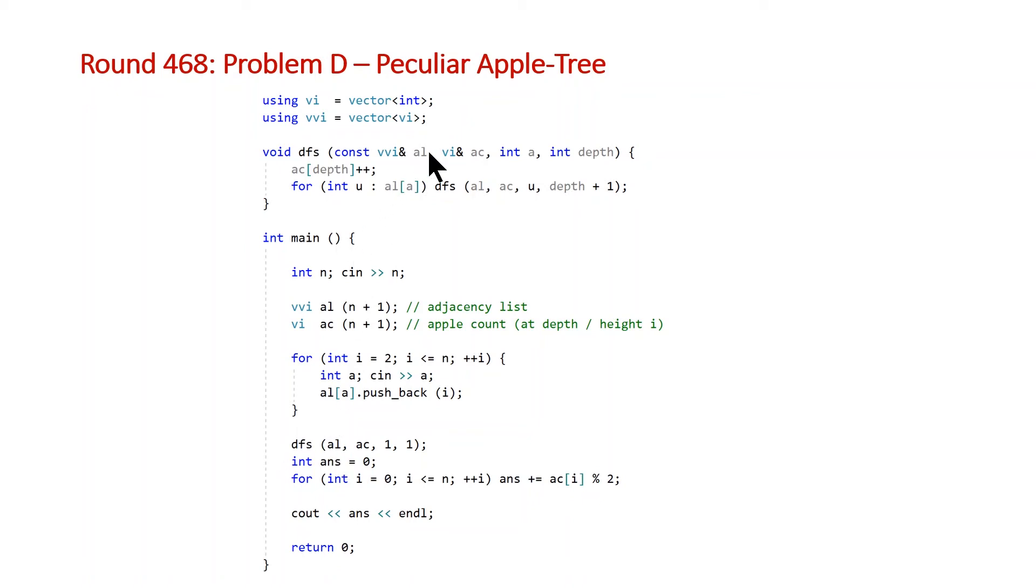And so then we have our adjacency list set up and we can pass that as the first parameter to our DFS function as a const ref as well as the apple count vector as just a ref because we're going to need to modify that, and our current inflorescence is 1 and our current depth is 1. And so all we do while we're doing this DFS is for each depth we do a post increment and then we call the DFS function for each one of the inflorescences that we can get to from our current inflorescence.